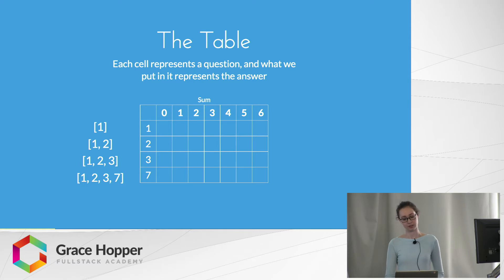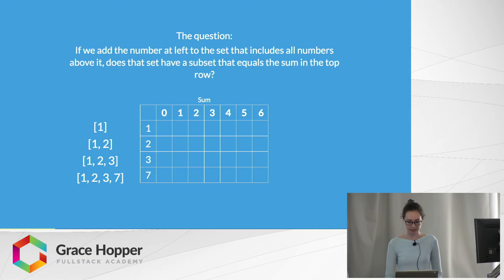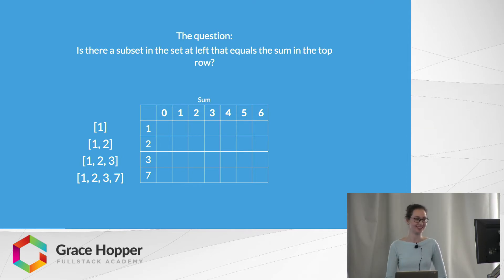Each cell represents a question, and what we put in it represents the answer. The question at all of our cells is: if we add the number at left to the set that includes all numbers above it, does that set have a subset that equals the sum in the top row? A shorter version is: is there a subset in the set at left that equals the sum in the top row?